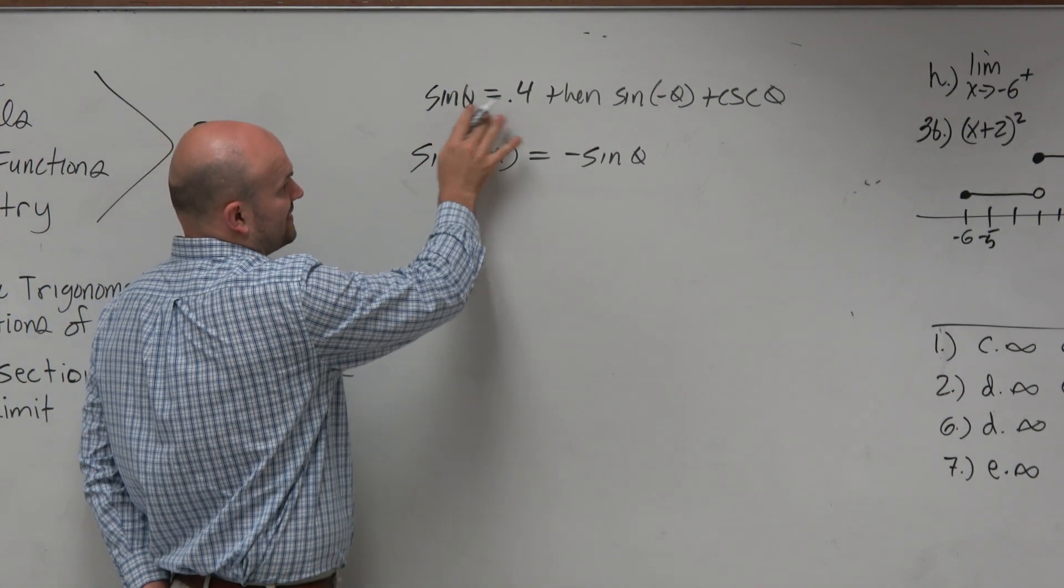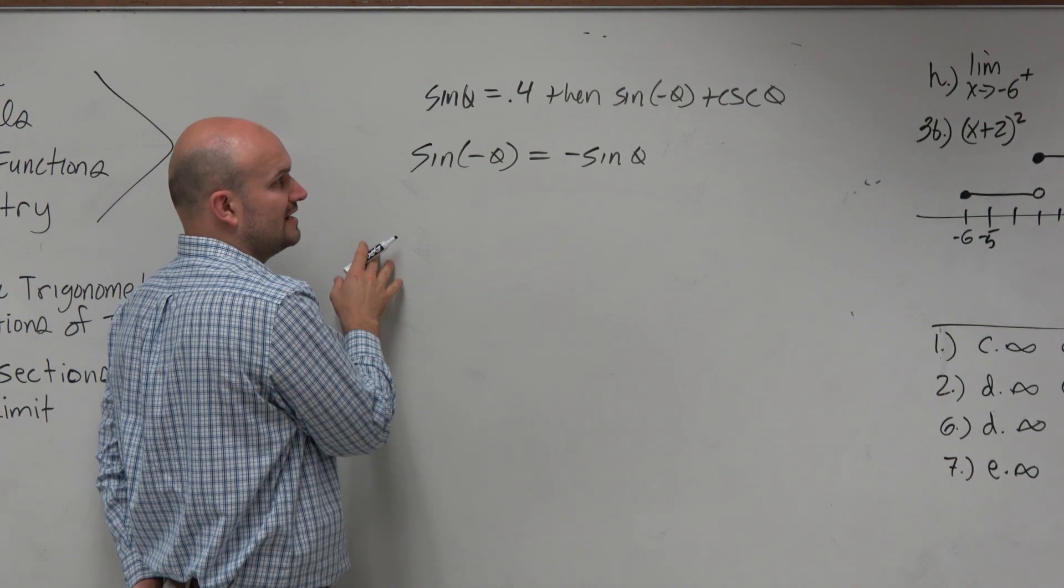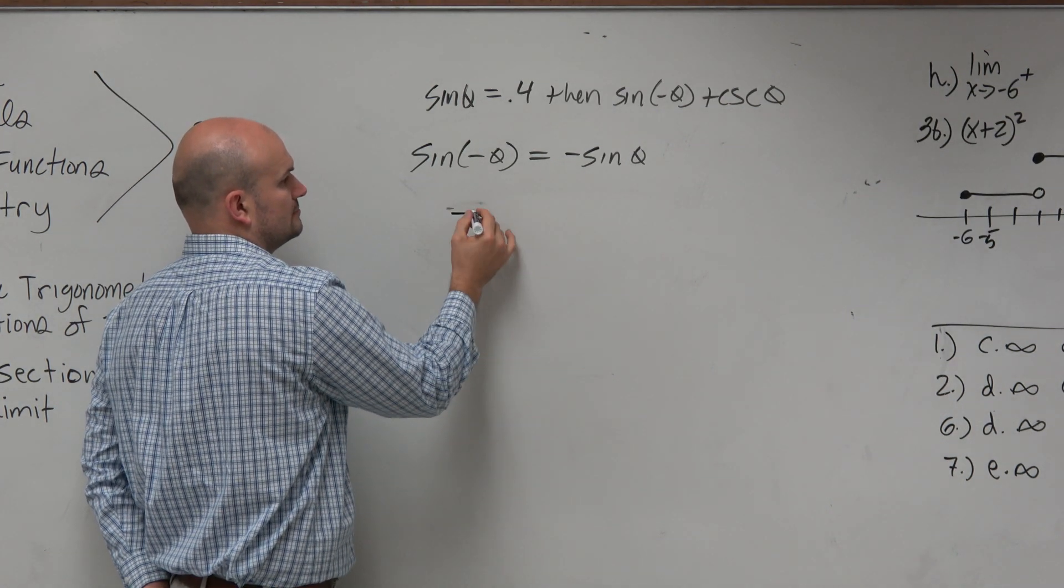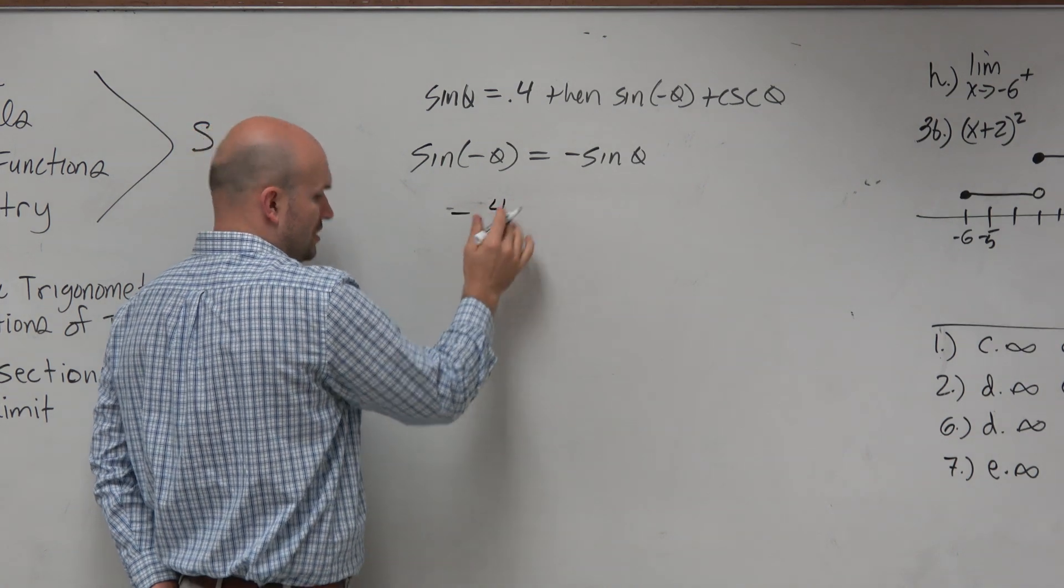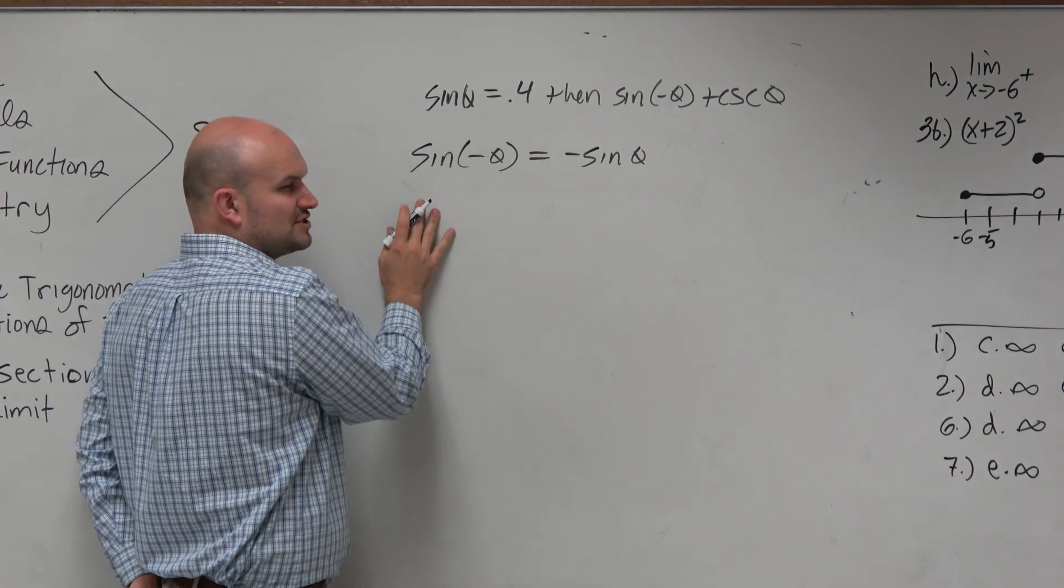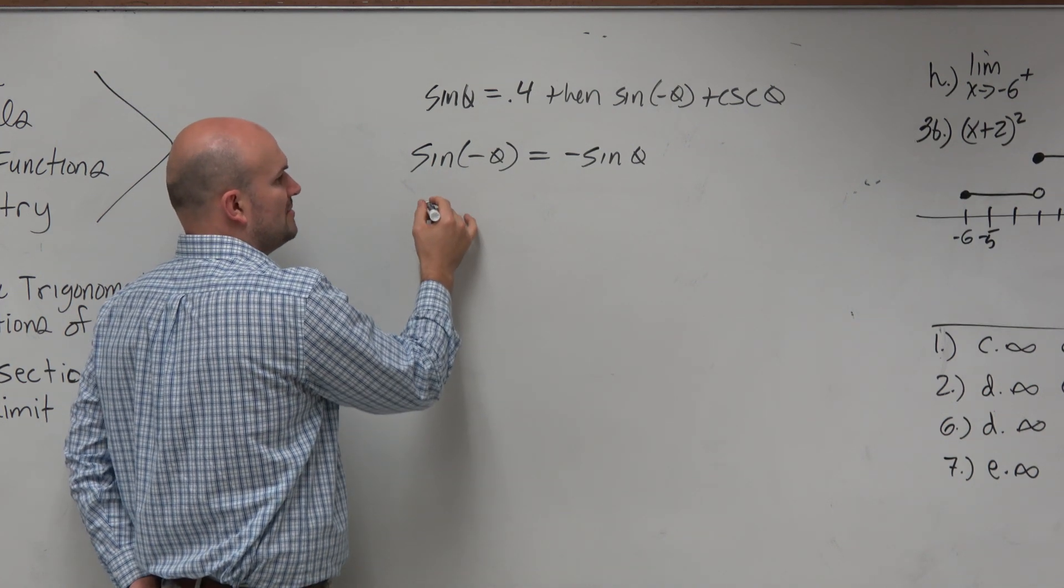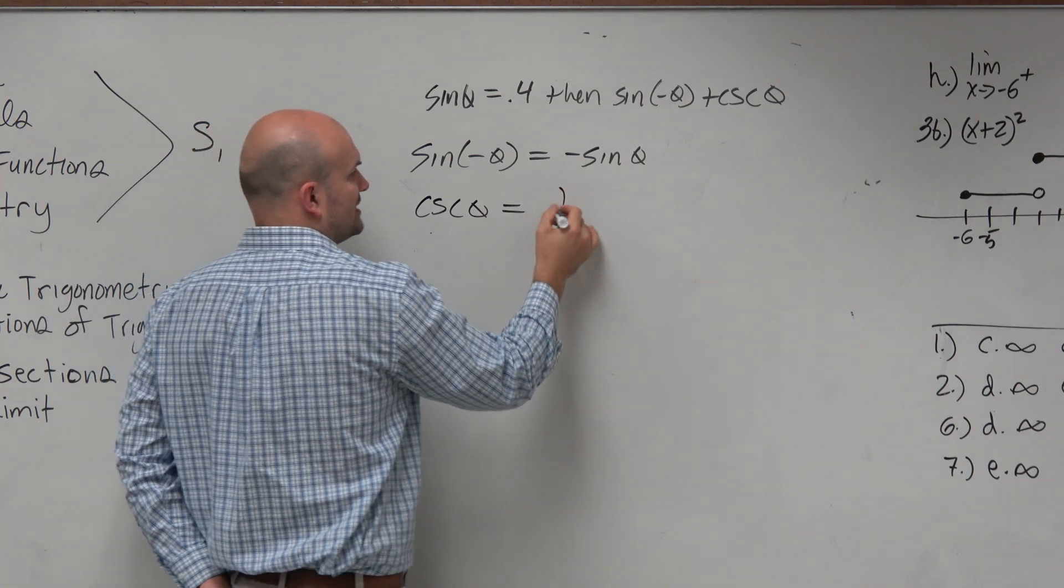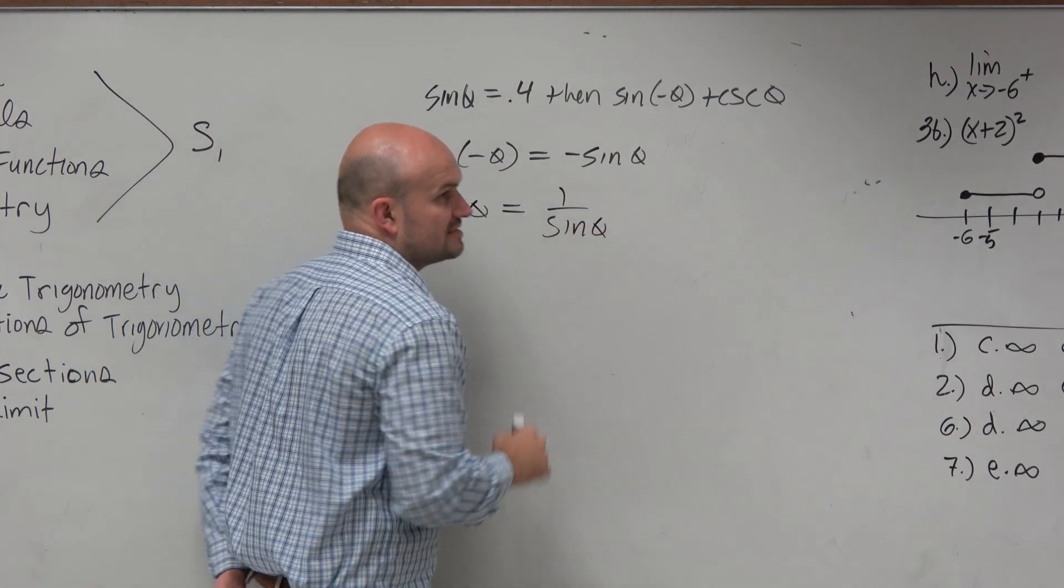So therefore, if sine of theta equals 0.4, then sine of negative theta is just going to equal negative 0.4. Or let's just rewrite this. And then, hold on, let's go through our two identities. And then also remember that the cosecant of theta, using the reciprocal identity, is 1 over the sine of theta.